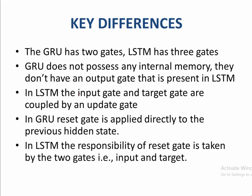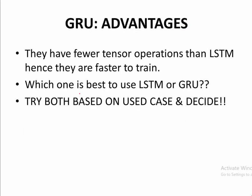The key differences: GRU has two gates while LSTM has three, so GRU is less complicated. GRU does not possess any internal memory and does not have an output gate. In LSTM, the input gate and target gate are coupled by an update gate, and in GRU the reset gate is applied directly to the previous hidden state. In LSTM, the responsibility of a reset gate is handled by two gates: the input gate and target gate. GRU advantages: because it is simpler, it has fewer tensor operations and is faster to train. To decide which one to use, try both based on your use case and then decide.